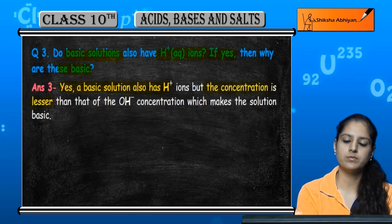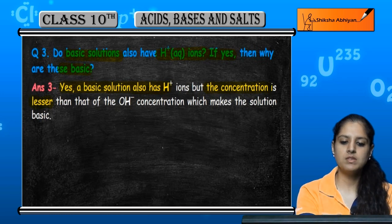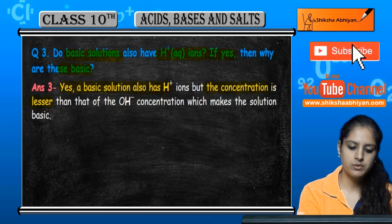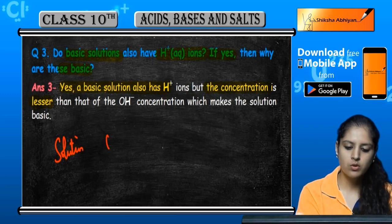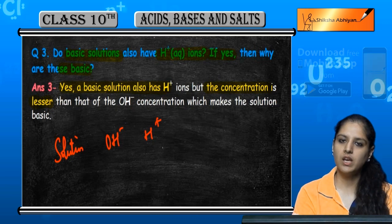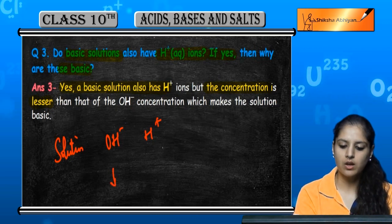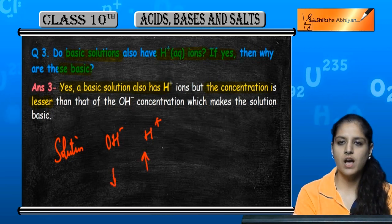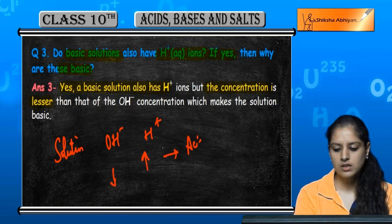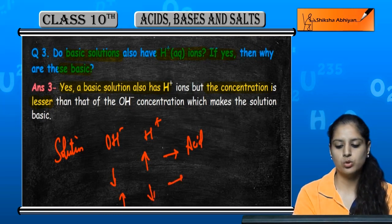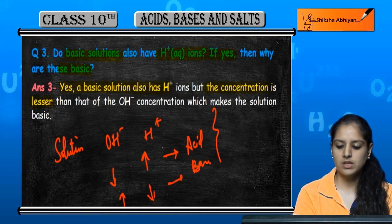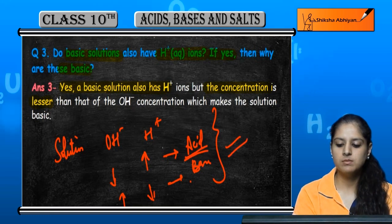If we look at any solution, for example, there is OH and H present. If OH is less and H is more, then it is an acid. If H is less than OH, then it is a base. The relative concentration of H+ versus OH- determines whether a solution is acidic or basic.